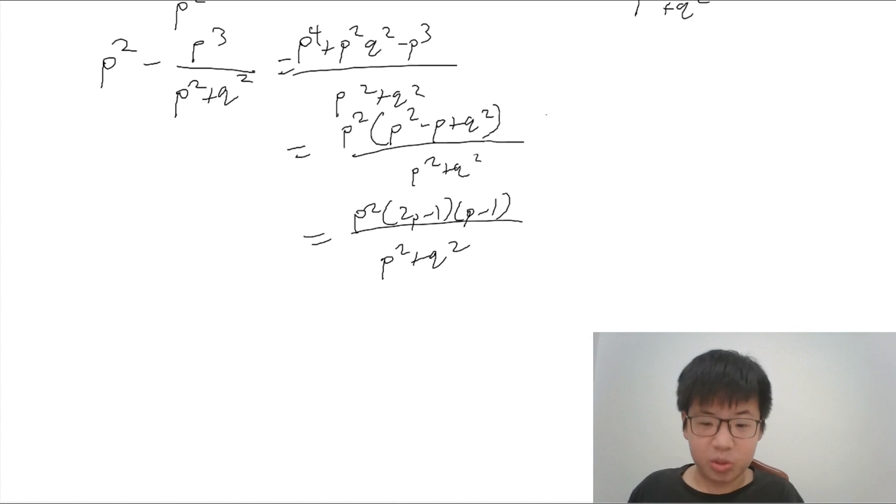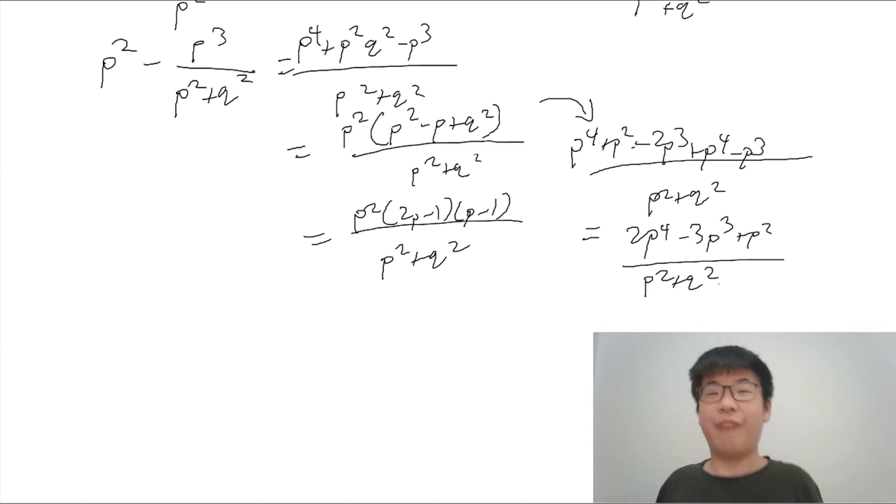And, basically, this will amount to P4 plus P squared minus 2P cubed plus P4 minus P cubed. So, I'm just showing you the workings over P squared plus Q squared equals to P squared over P squared plus Q squared, which effectively factorizes into the expression shown on the left.